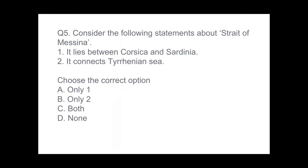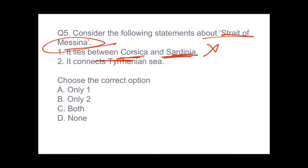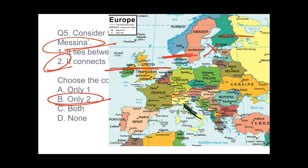Question 5: consider the following statements about the Strait of Messina. Statement 1 — it lies between Corsica and Sardinia: wrong, because between Corsica and Sardinia lies the Strait of Bonifacio. Statement 2 — it lies between Italy and Sicily and connects the Tyrrhenian Sea with the Ionian Sea: correct. So the answer is only Statement 2 (option B). On the map you can see Italy and Sicily, with the Strait of Messina connecting the Tyrrhenian Sea to the Ionian Sea.